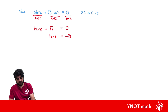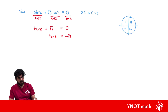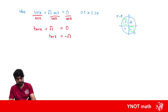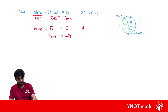Let's draw our unit circle to help. We're looking for values of tan that are negative, which happens in the second and fourth quadrants. In the second quadrant we have π minus our base angle, and in the fourth quadrant we have 2π minus our base angle. We find the base angle by taking the inverse tan of √3, disregarding the negative, which gives us a base angle of π/3.